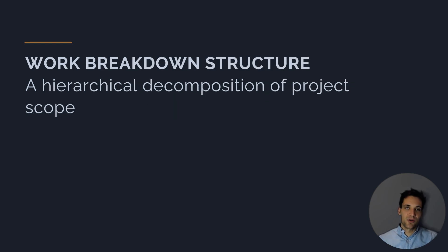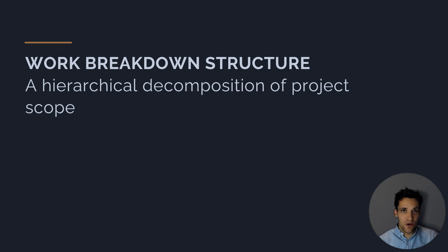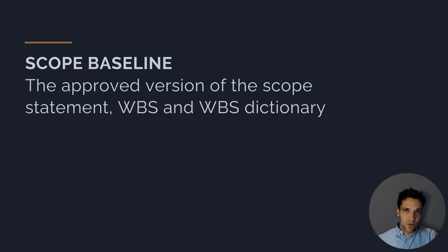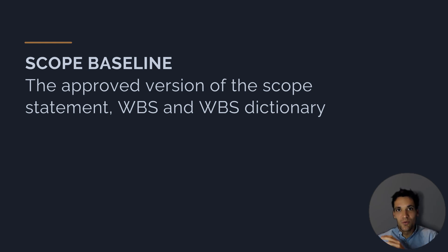To help us define and understand scope, we use a tool called a work breakdown structure — a hierarchical decomposition of the project scope. For example, we take our bridge and break it down into all core components: design work, earthworks, structures, roadworks, line marking — all these activities broken into component pieces across multiple layers, until we have a full work breakdown structure dictionary. Once we've created our project scope statement, our work breakdown structure, and our WBS dictionary, we bundle these together into our scope baseline — the clearly defined and detailed works we're going to do to complete our project.